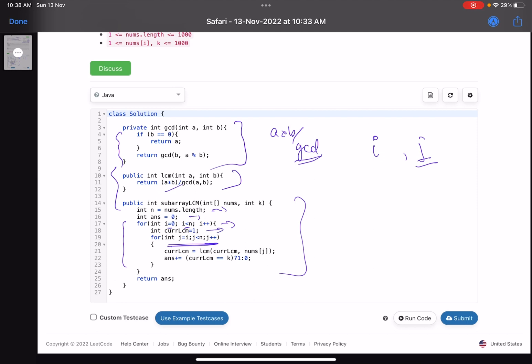At every iteration, current LCM starts at 1. Then current LCM equals LCM of current LCM and nums[j]. Suppose this is my array - whatever the LCM is till here, I find the LCM of the LCM found so far and the current element as well.